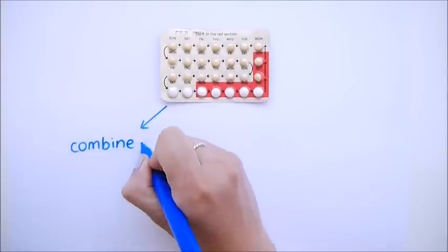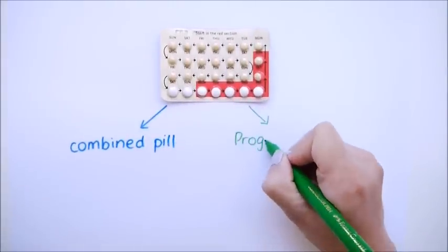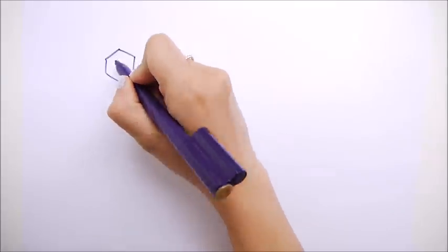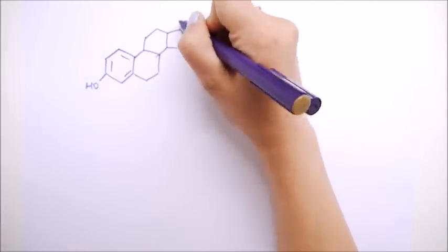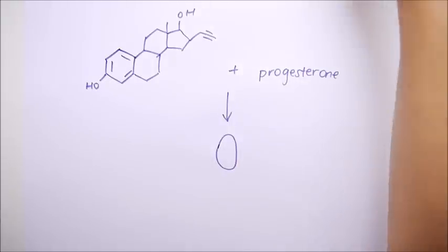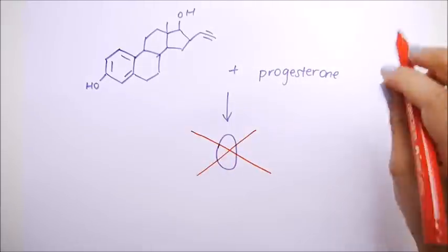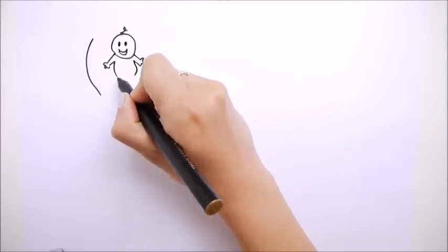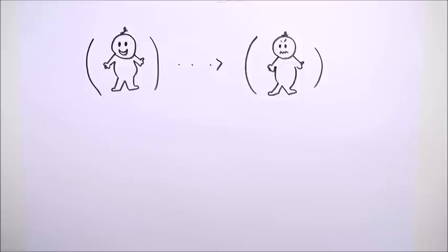There are two main types of oral contraceptives on the market, the combined pill and the progesterone only or mini pill. The combined pill has oestrogen, usually in the form of ethinyl estradiol and a progesterone, and they stop the release of the hormones that control an egg from developing. These hormones also make the environment of the uterus not ideal for an egg to implant and develop into a baby.